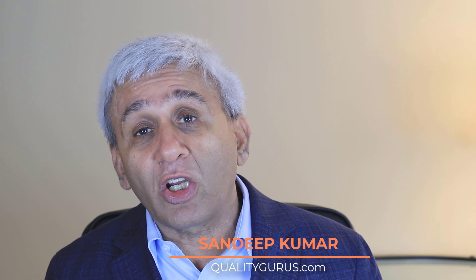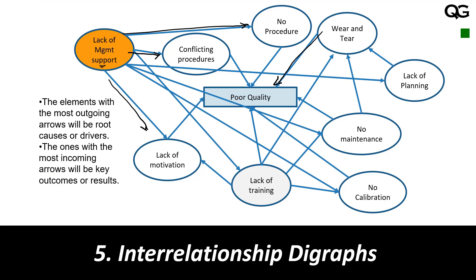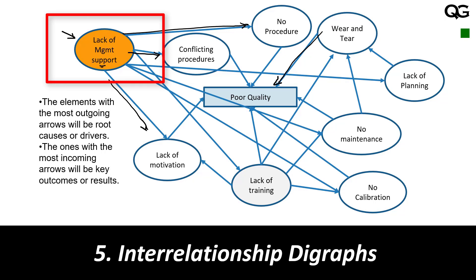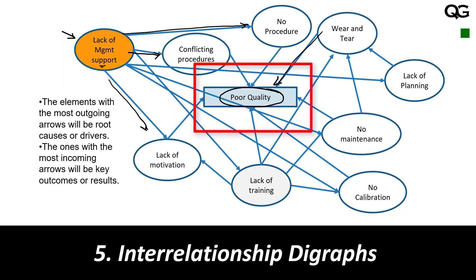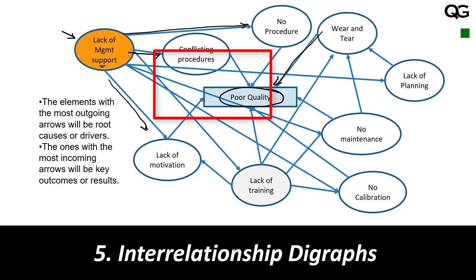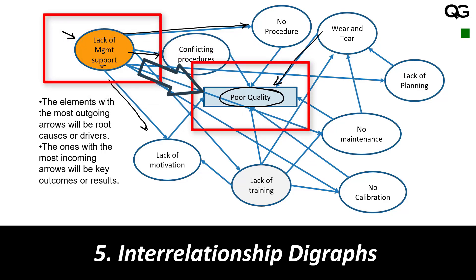Once you have drawn this interrelationship diagram, you need to look at two areas: the area where a lot of arrows are going out, and the area where a lot of arrows are coming in. The point from which a lot of arrows are going out is the root cause or driver. Where a lot of arrows are coming in — in this case, poor quality — that is the result or outcome. So the root cause here is lack of management support, and the outcome is poor quality.